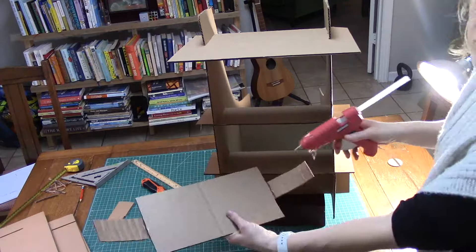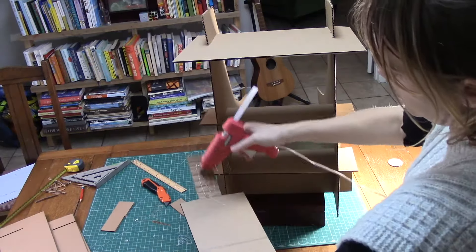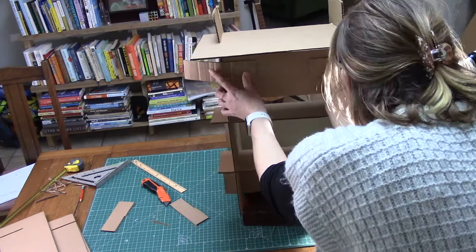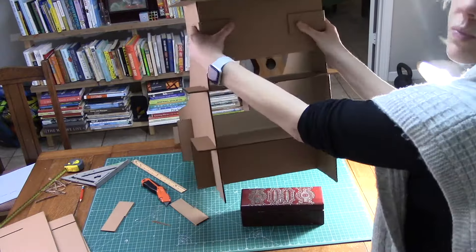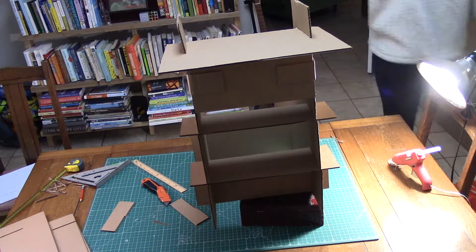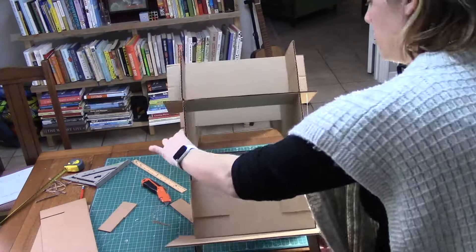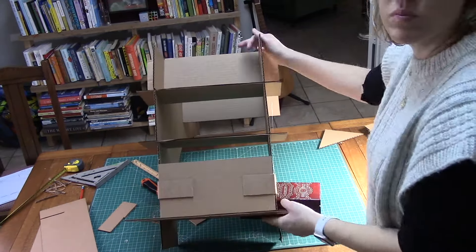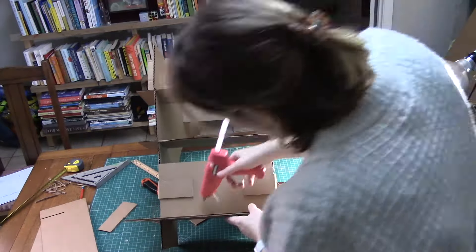put a couple of triangular gussets underneath there because this is where students will be placing their cars, and so it needs a little bit of reinforcement. I just have two really simple right triangles that the legs are six inches, and I'm reinforcing the platform. Then you might want to also